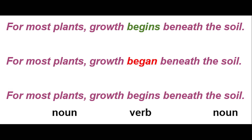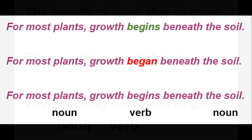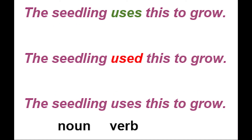Let's look at another example. I've written: 'The seedling uses this to grow.' That's using the present tense form of the verb 'use.' I did not write 'The seedling used this to grow.' That sounds like I'm talking about an ancient seedling from long ago that doesn't exist anymore.